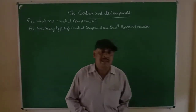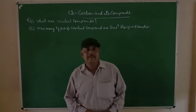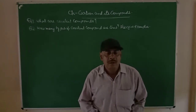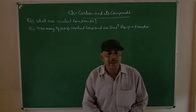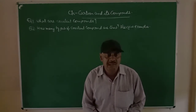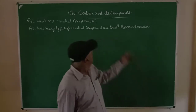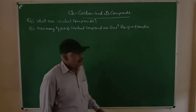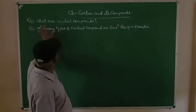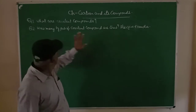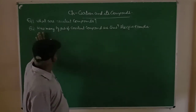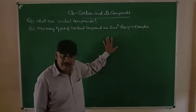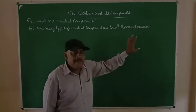Good morning students. Today I am going to discuss two important questions in the chapter Carbon and Its Compounds. The first question is: what are covalent compounds? And secondly, how many types of covalent compounds are there? Also give examples.